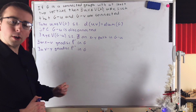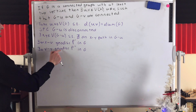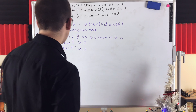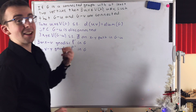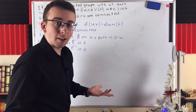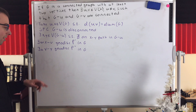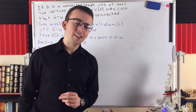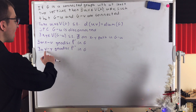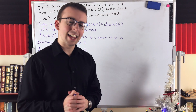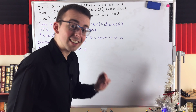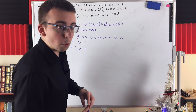We'd really like to know that these geodesics exist in G minus U. The only way they'll be in G minus U is if U is not on either of these geodesics. Is that the case? Indeed it is, and this is probably the most important point of the proof.